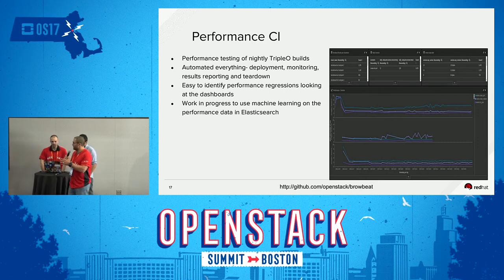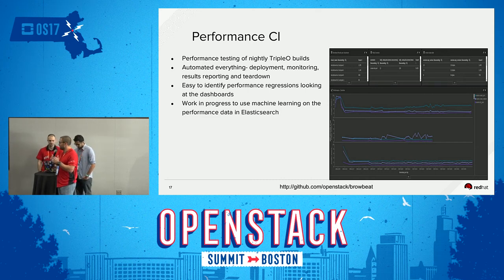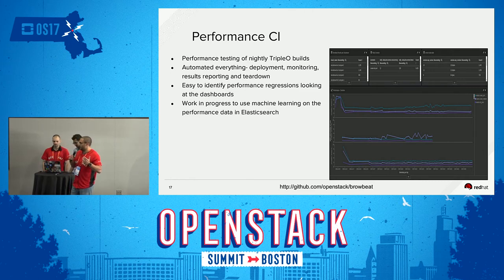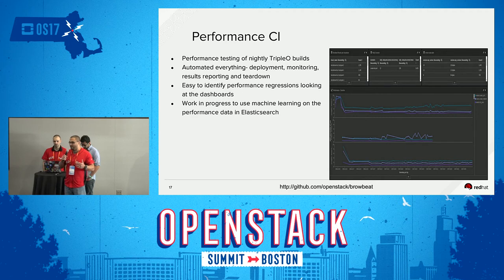Anyone can go to this Kibana dashboard — you just need to complete a captcha to get in. You can start looking at how different versions of OpenStack are performing. We found an issue with Neutron where a commit caused router create and router interface add times to spike up about two weeks ago, and now we're investigating. We would never have caught that just running Rally statically — we saw it from trending data.